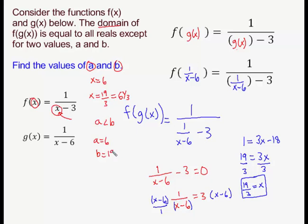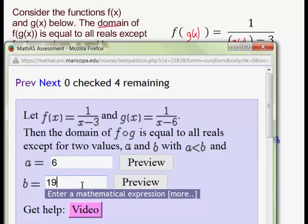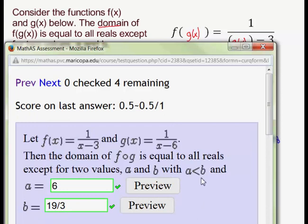So just to verify that I get credit for those values of A and B, I will type in A equals 6, B equals 19 divided by 3, I will press enter to submit my answer, and I get credit for both parts. So hopefully this video was helpful.